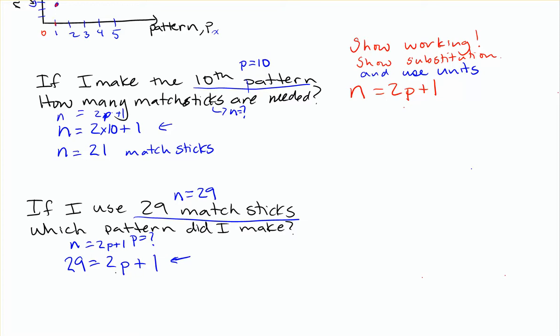So thinking about our algebra, we want to solve for p. First thing I'm going to do here is take away 1 from each side. So 28 is equal to 2p. Then I'm going to divide by 2 on both sides. So 14 is equal to p. And then put it into context. That's the 14th pattern. Right? Think about units or context for this. I needed 21 matchsticks above to build the 10th pattern. But here, with 29 matchsticks, I can build the 14th pattern. So again, you have to show your working and your substitution, and make sure you're using any units that you might need here, such as matchsticks or balloons or bricks or whatever the case might be for what they're building patterns out of.